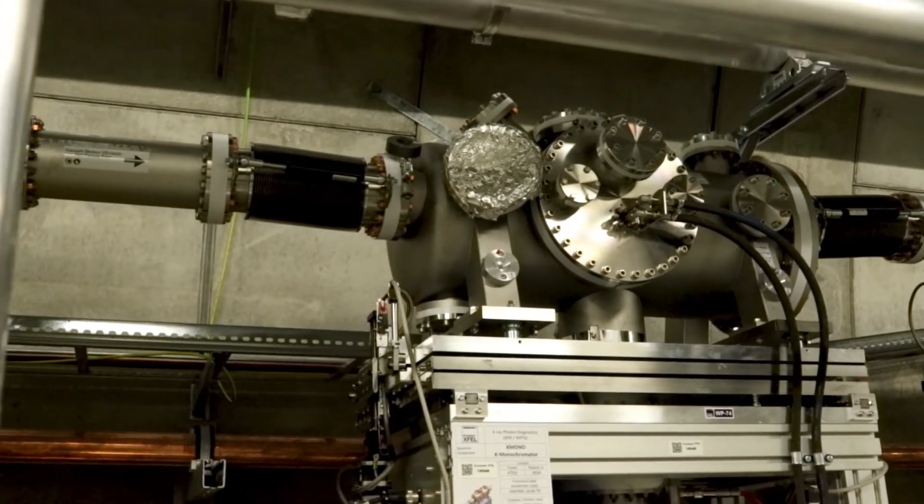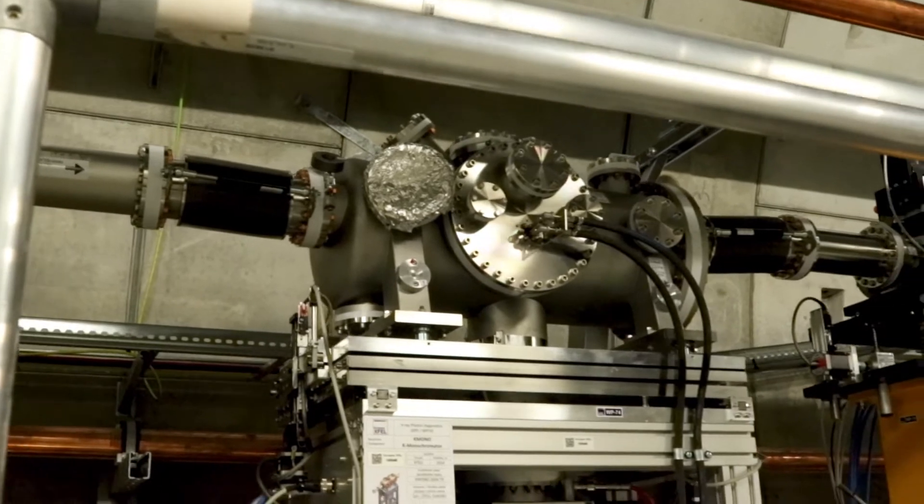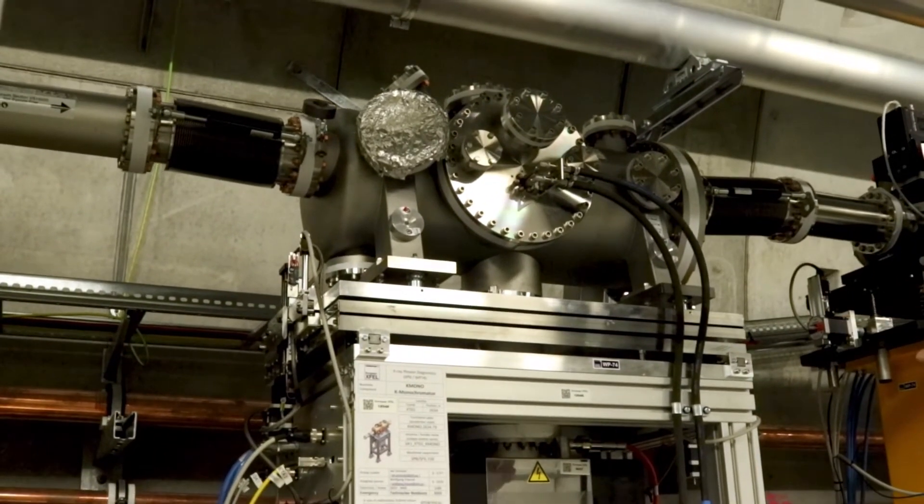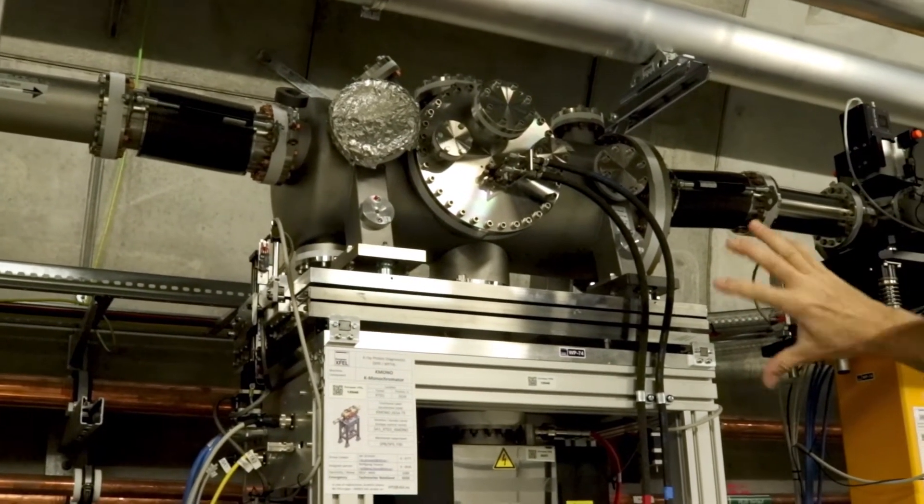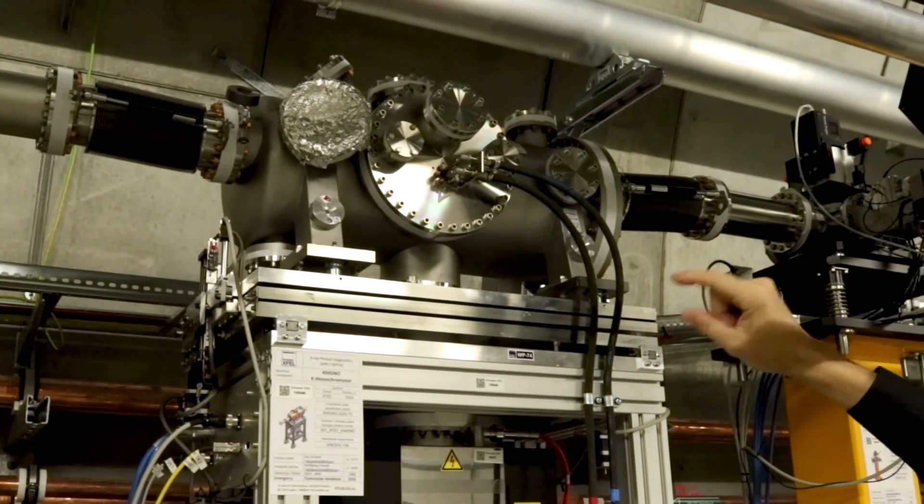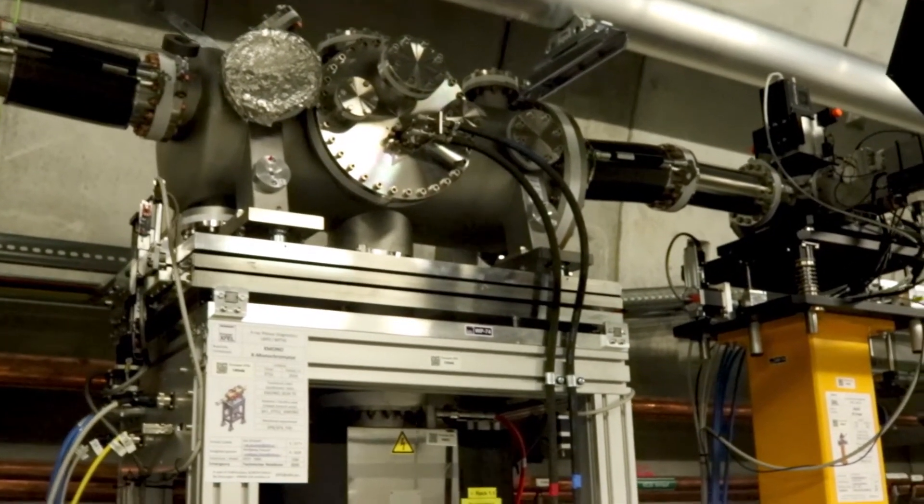Inside this chamber, which can be moved in and out transversely to the beam, there are two channel cut crystals on goniometers. They can be rotated in order to filter the frequencies, the spectrum of the radiation.